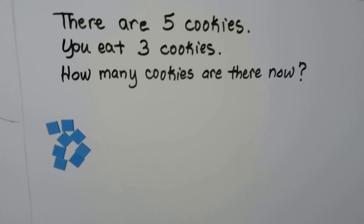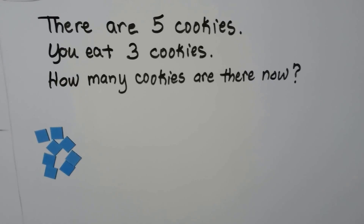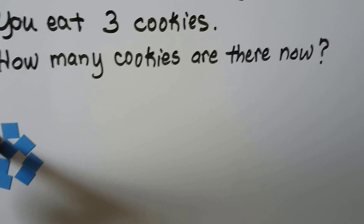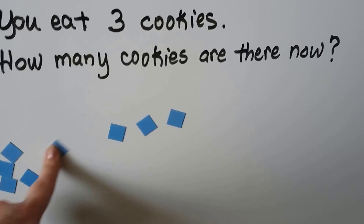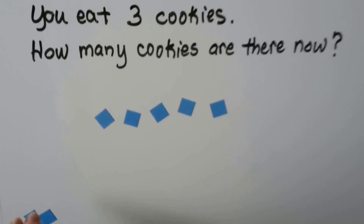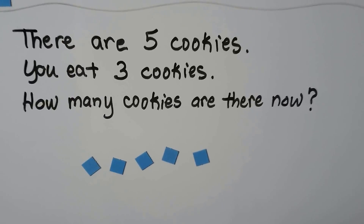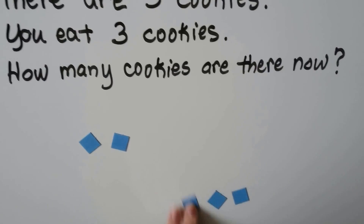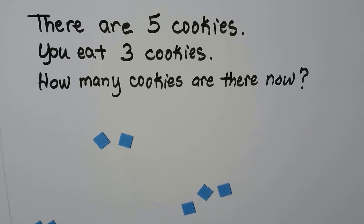There are five cookies. You eat three cookies. How many cookies are there now? We can use counters to help us model this. There are five cookies, so we'll use five counters: one, two, three, four, five. You eat three: one, two, three. How many cookies are there now? Two. Two cookies.